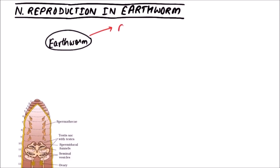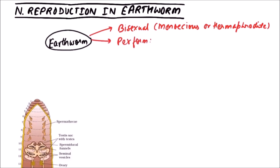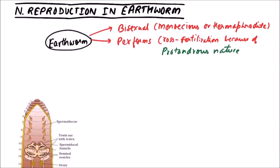Earthworm is bisexual, i.e. monoecious or hermaphrodite, but still it performs cross-fertilization because of its protandrous nature, i.e. testis matures earlier than ovary. No asexual reproduction is found in earthworm.